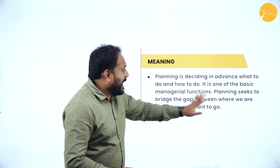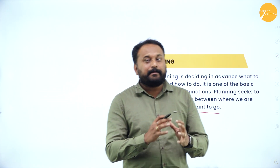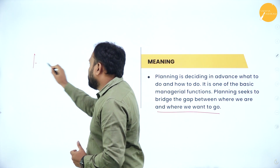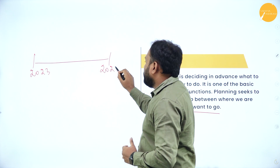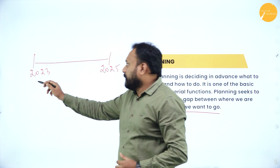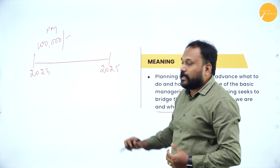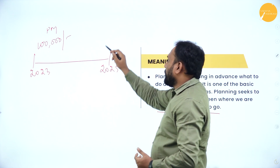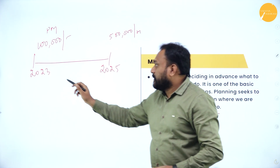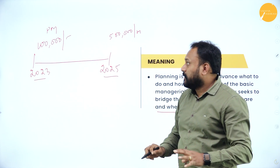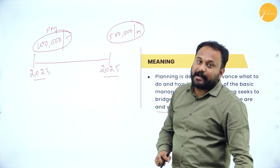When we go with managerial functions, planning seeks to bridge the gap between where we are and where we want to go. For example, right now we are in 2023 and we plan for 2025 — say two years ahead, that is a future course of action. Say I'm making a profit of one lakh rupees per month, and in 2025 I need to increase my profit to five lakh rupees per month. Planning bridges the gap between where you are and where you want to go, and what you want to achieve.